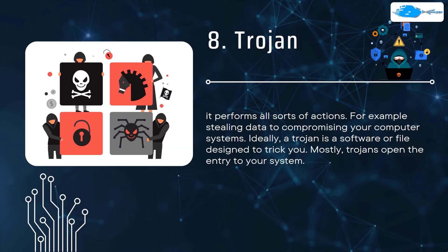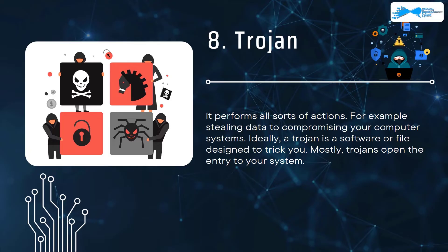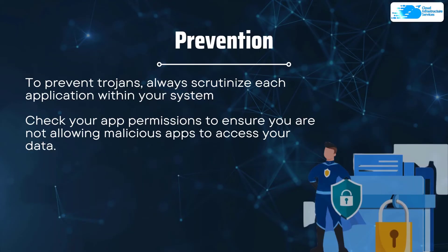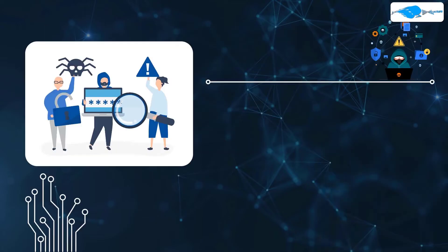Number eight is Trojan. A Trojan performs all sorts of actions such as stealing data and compromising systems. It is software or a file designed to trick you — mostly trojans open an entry point into your system. To prevent trojans, always scrutinize each application within your system and check app permissions to ensure you are not allowing malicious applications access to your valuable data.